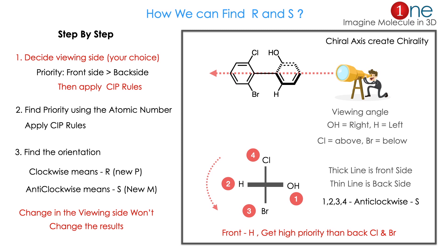In the thick line, hydrogen is on the left side and OH is on the right side, so you give them priority 1 and 2. Then chlorine is above and bromine is below. Bromine gets higher priority than chlorine, so they are assigned 3 and 4. The orientation is anti-clockwise, so the configuration is S, or you can say M.